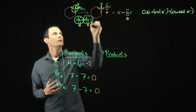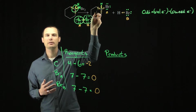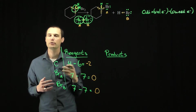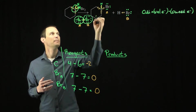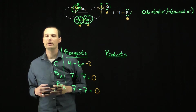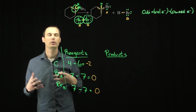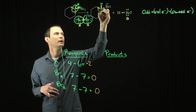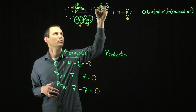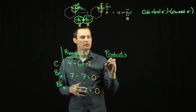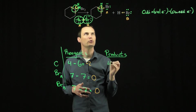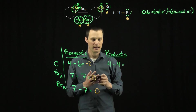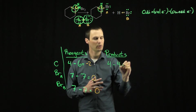Looking at the products. The carbon owns half of the electrons in the carbon-carbon bond, since they have the same electronegativity, and all of the electrons in the carbon-hydrogen bond, since carbon is more electronegative than hydrogen. But it owns none of the electrons in the carbon-bromine bond, because bromine is more electronegative than carbon. So it wants four electrons in its neutral ground state and it owns four electrons in this molecule. This carbon is now at the zero oxidation level.